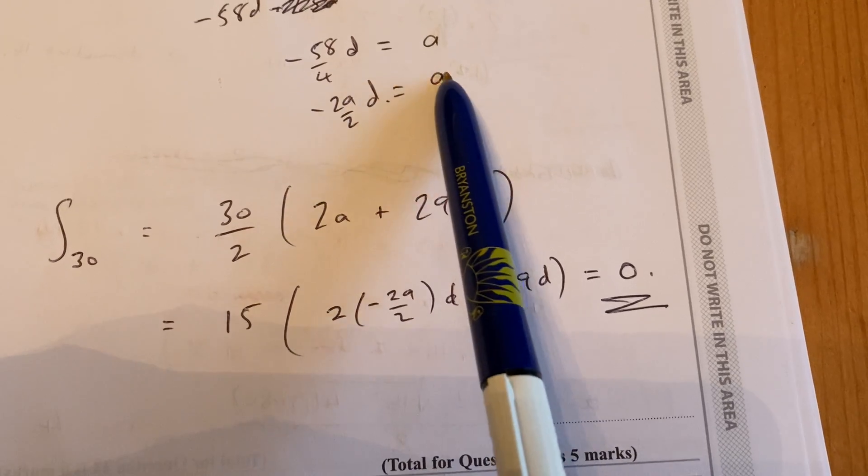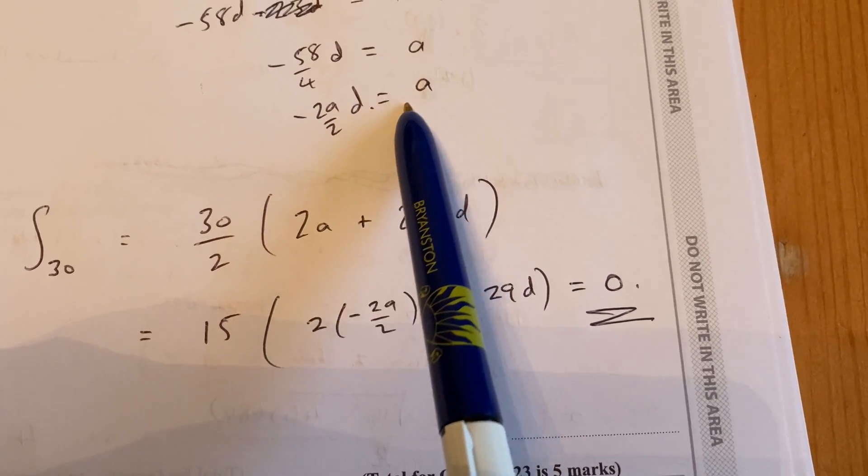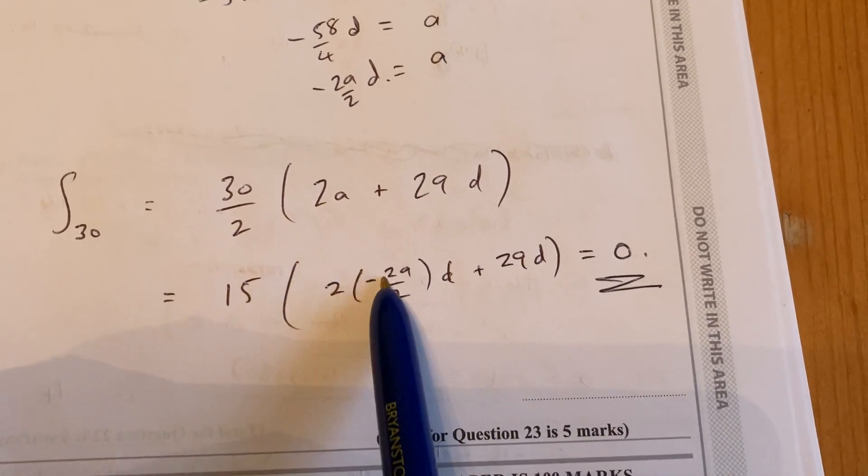And I'm going to substitute in for a. I've got here, I know what a is, it's minus 29 over 2d. So I'm going to put that in here for a.